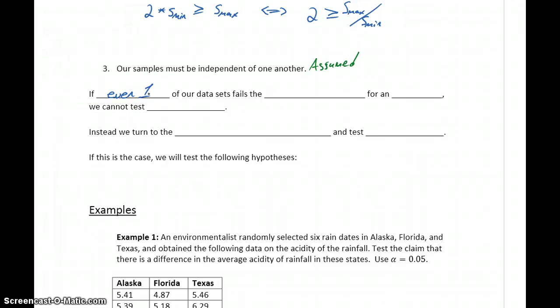Keep in mind that if even one of our data sets fails those conditions above, if even one of our data sets fails the conditions for an ANOVA, we can't test a claim about means. Instead, what we'll do is turn to the Kruskal-Wallis test and test a claim about medians.